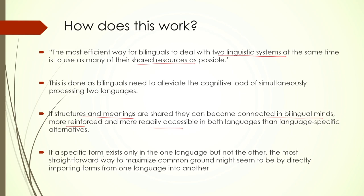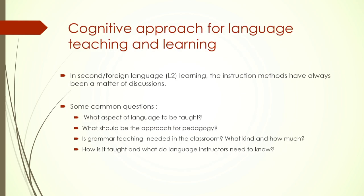If a specific form exists in only one language but not in the other, the most straightforward way to maximize common ground in that case would be to transfer the property of one language into the other. This is how the model tries to make sense of the divergent results. References are available at the end where you can look up the details.